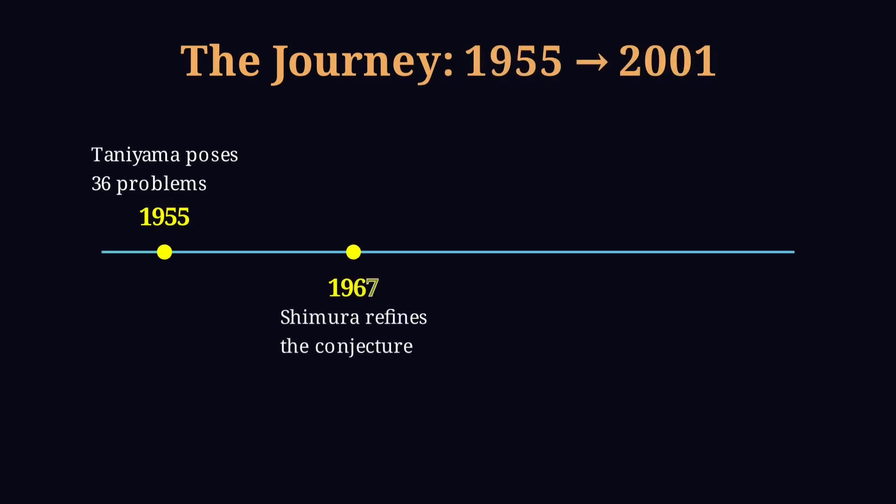Let's trace the journey. In 1955, Taniyama first proposed his 36 problems. In 1967, Shimura refined and expanded the conjecture, giving it clarity and power. In 1995, Wiles proved Fermat's last theorem, confirming a part of what Taniyama once dreamed. And by 2001, the full modularity theorem was proven, completing the vision.